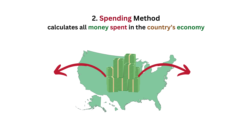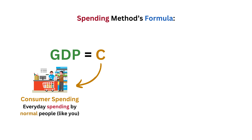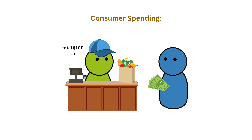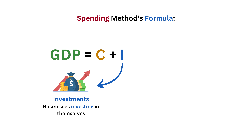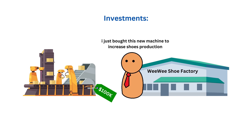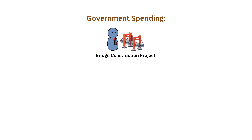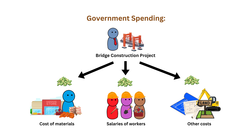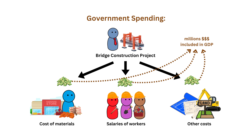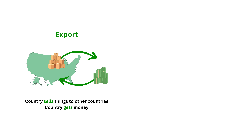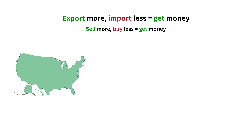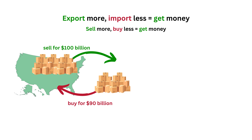The spending method calculates the total value of how much money is spent in the economy. The formula is: GDP = Consumer Spending + Investment + Government Spending + Net Export. Consumer spending includes everyday spending by normal people — for example, if you spend $100 on groceries, that $100 is counted as part of GDP. Investment is businesses investing in themselves — for instance, if a factory buys a new machine to increase production, that's counted as investment. Government spending includes all spending by the government, such as building a new bridge. Net exports are exports minus imports — countries aim to sell more than they buy to make money.